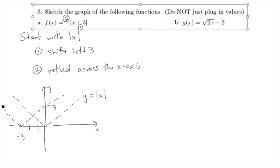And now we reflect it across the x-axis. So that is y-intercept of negative 3. So there's the graph of f of x, y equals f of x.